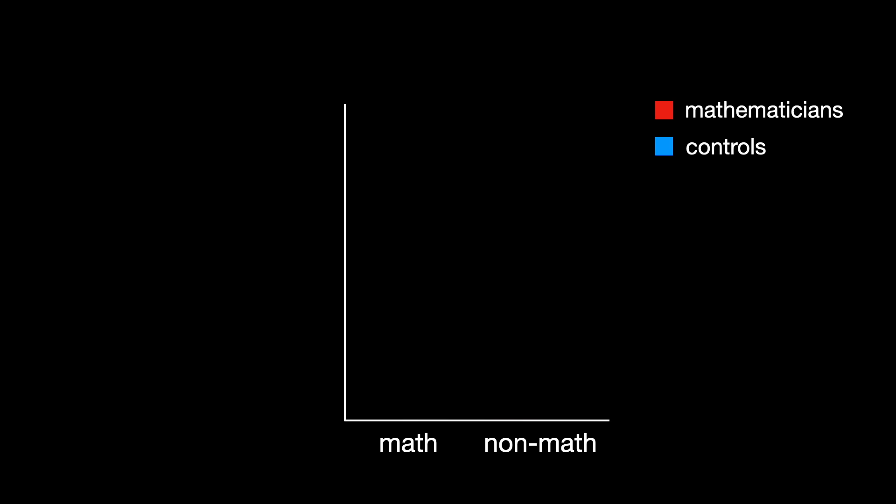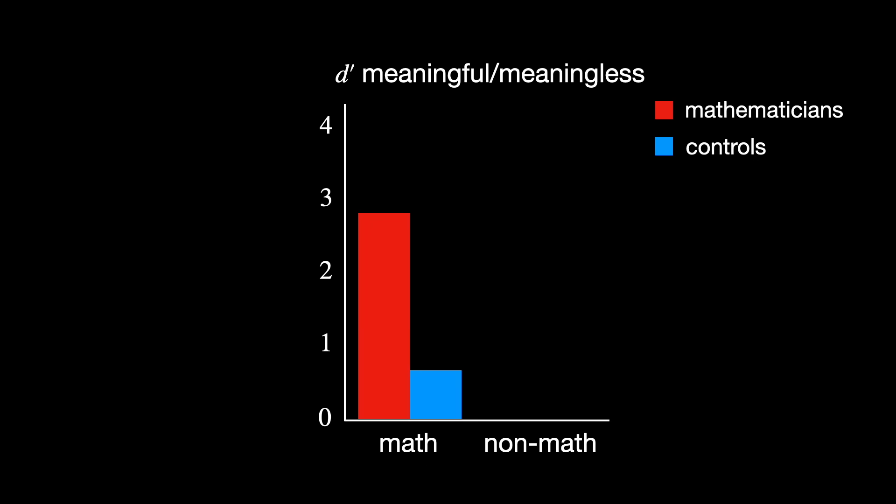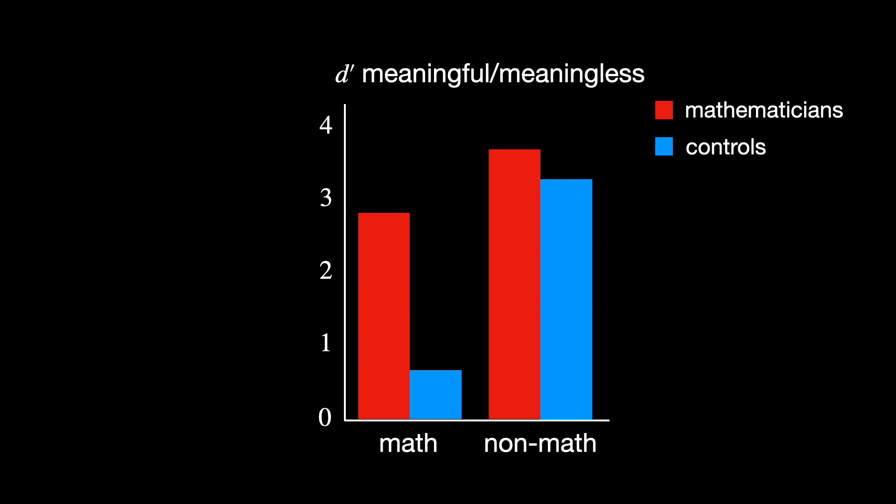Mathematicians, of course, also scored higher in being able to quickly tell whether a statement in mathematics made sense, no matter whether it's true or false. And both groups had similar scores for non-math questions.